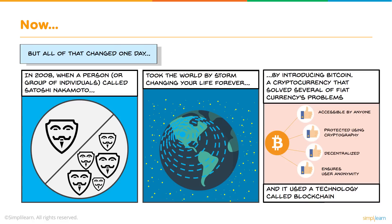Bitcoin is a cryptocurrency that solved several of fiat currency's problems. It is accessible by anyone, it is protected by cryptography, it is decentralized — there is no centralized authority owning the network or taking care of the transactions. It is the network and the participants who take care of all the transactions and the sanity of the network. The anonymity of all users is ensured, and Bitcoin uses blockchain technology as its underlying technology.